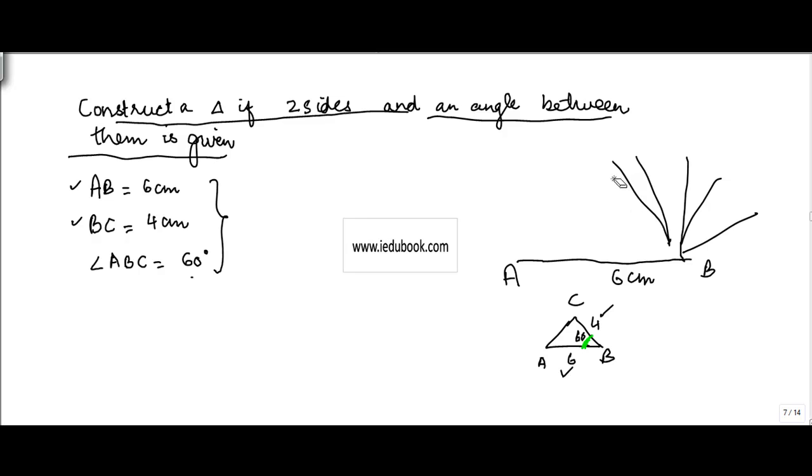So instead of doing this guess work, what I do is I construct a 60 degree angle at point B. Let's say this angle when constructed is equal to something like this.